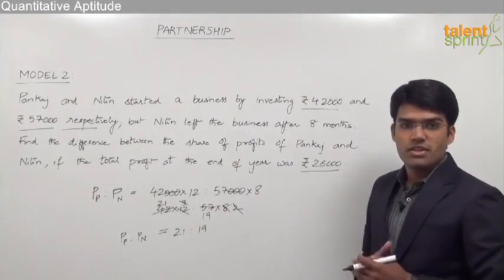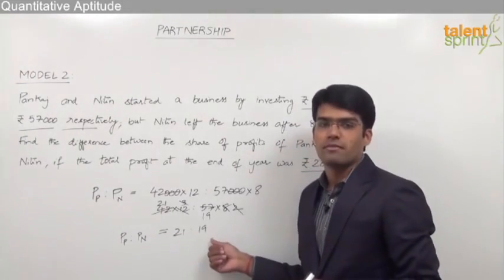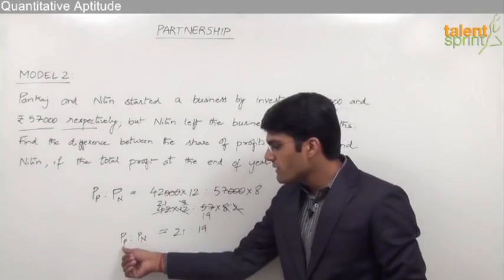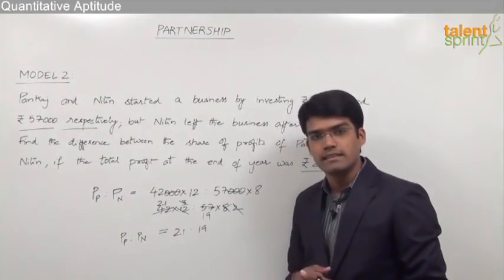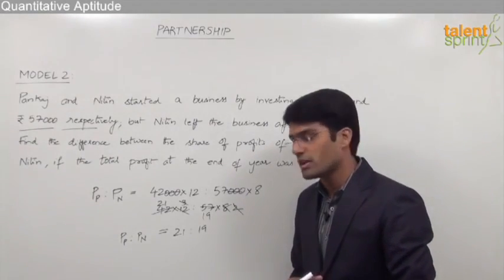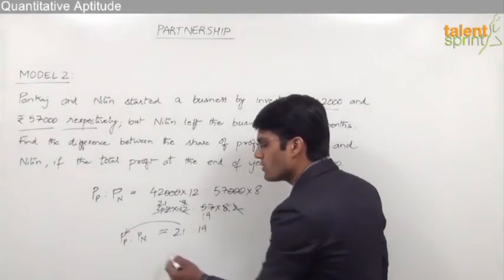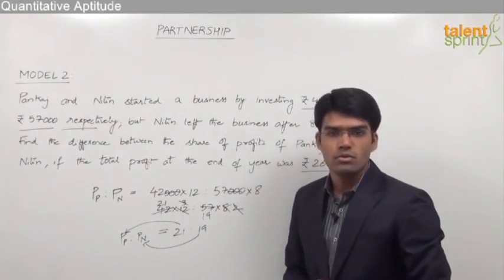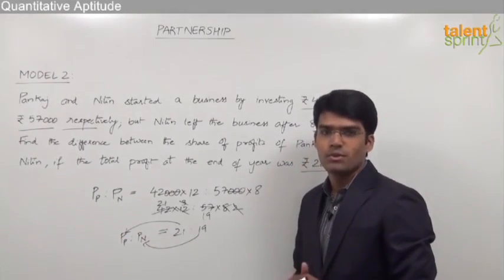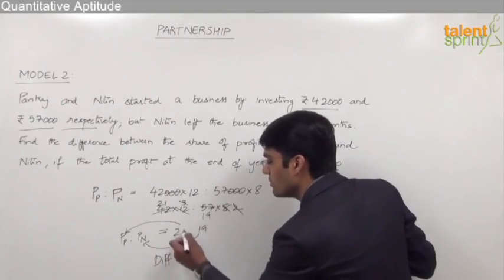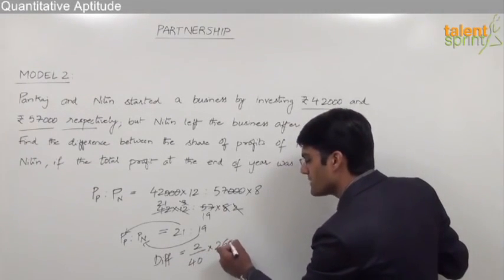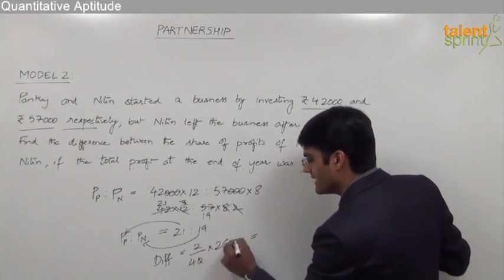To find out the difference between the share of profits of Pankaj and Nitin, we need not calculate their individual profits. Instead, we can directly get the answer by taking the difference from the ratio. The ratio is 21 is to 19, meaning the total profit is divided into 40 parts — 21 parts go to Pankaj and 19 parts go to Nitin. The difference is 2 parts out of 40, so: 2 divided by 40 multiplied by 26,000 gives us 1,300 rupees.